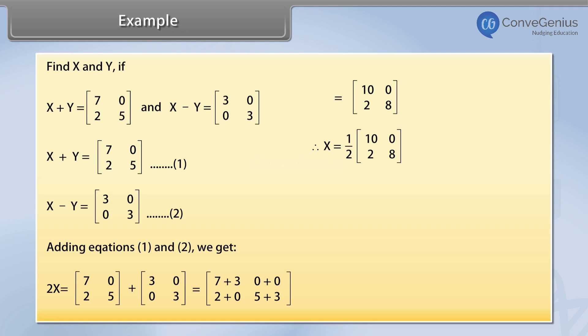Therefore, x equals the matrix with first row 5, 0 and second row 1, 4.